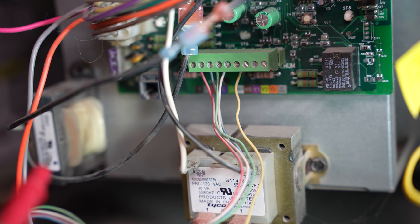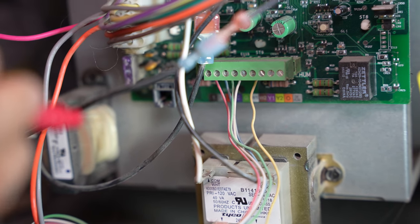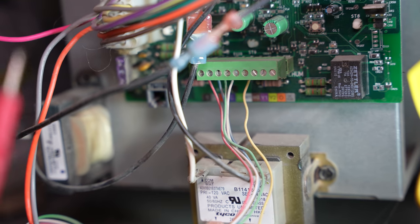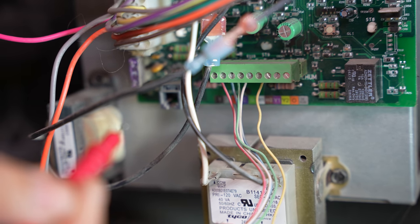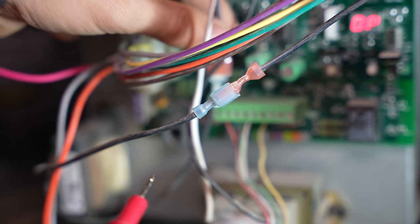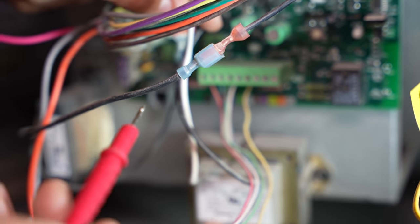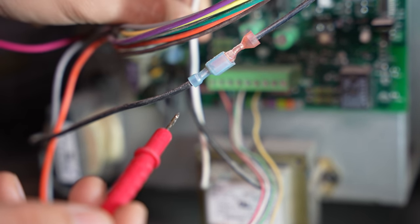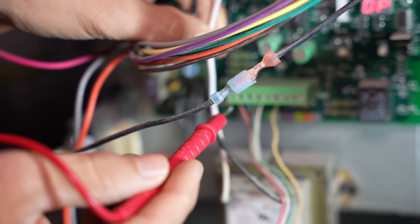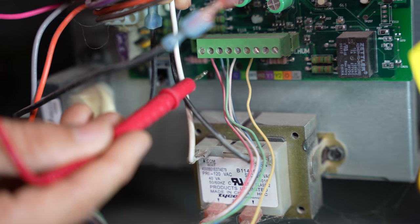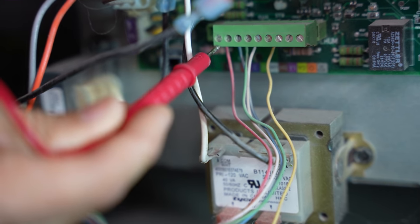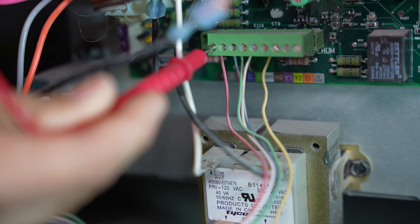And one last thing I would like to mention is that if you're looking for that 24 volt common because you're troubleshooting with a meter, instead of the 24 volt common, if for some reason you absolutely can't find it, you could just use ground or the chassis, the body of the furnace. So for example, if I put one meter lead on R, that's where the red wire is going. If I put one meter lead on R, that's going to be our hot.